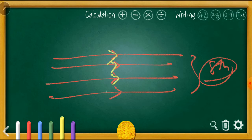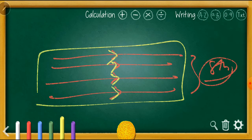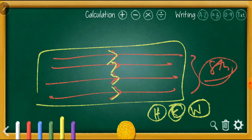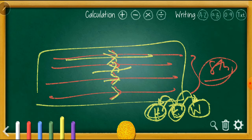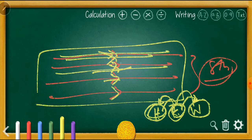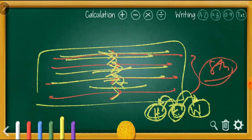The frictional force between various layers of a fluid is called viscous force. Water has the least viscosity among water, kerosene, and honey. Kerosene has higher viscosity than water but lower than honey. Honey has the highest viscosity, so the frictional force between its layers is very high and it cannot move freely. Since frictional force increases, it minimizes motion — that is why honey moves slowest.